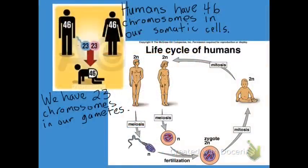Humans have 46 chromosomes in our somatic cells. Remember, somatic cells are everything besides our reproductive cells. And 23 chromosomes in our gametes. You can see an egg and sperm combine to form the zygote — so they're going from diploid to haploid to diploid.